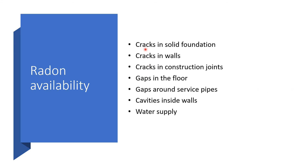Radon gets into our homes through cracks in solid foundations, cracks in walls, cracks in construction joints, gaps in floors, gaps around service pipes, cavities inside walls, and through the water supply. Heating and ventilation systems at home can also trigger radon entry through the floor.